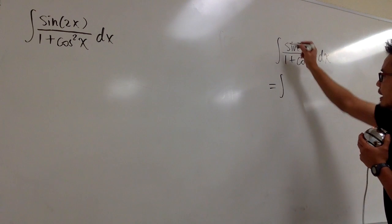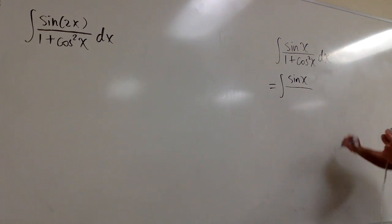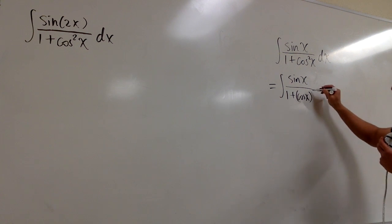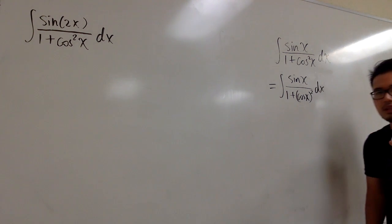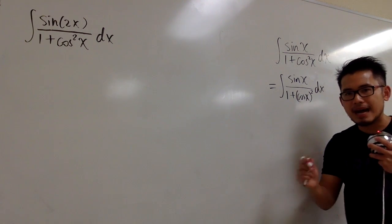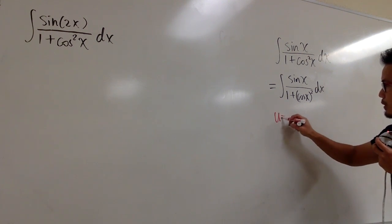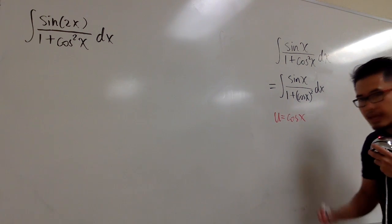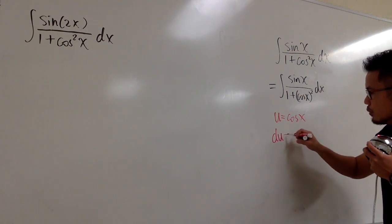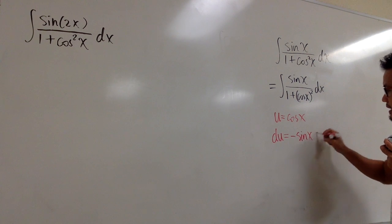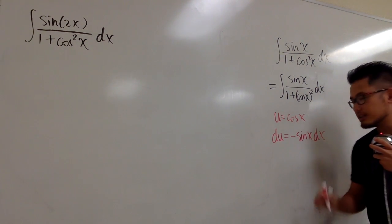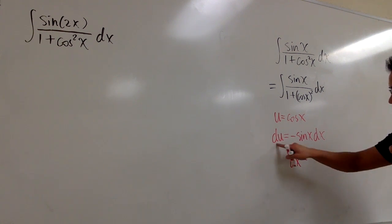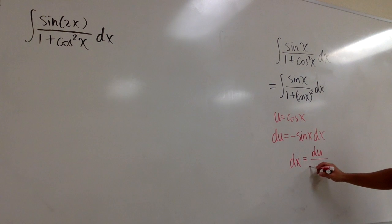Let me rewrite this integral. We have sine x over 1 plus, and for cosine squared x, let me write it as parentheses cosine x, then squared — don't forget the dx. I'm going to integrate this by u-substitution. I'll let u equal cosine x — not to the second power, just cosine x. Differentiating both sides, du equals negative sine x dx.